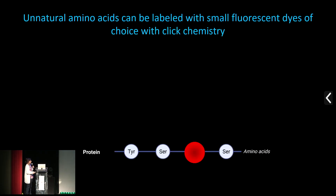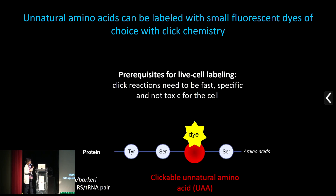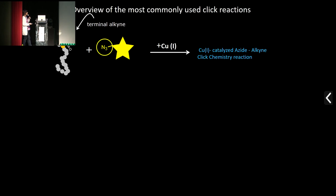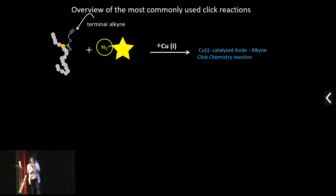This is why we have this two-step process: first incorporating small so-called clickable unnatural amino acids — they carry clickable groups — and then in the subsequent step adding a fluorophore. If we are talking about live cell labeling, it's very important that these click reactions are fast, specific, and not toxic for the cells. The most famous example is the alkyne-azide copper-catalyzed click reaction — very fast and very specific.